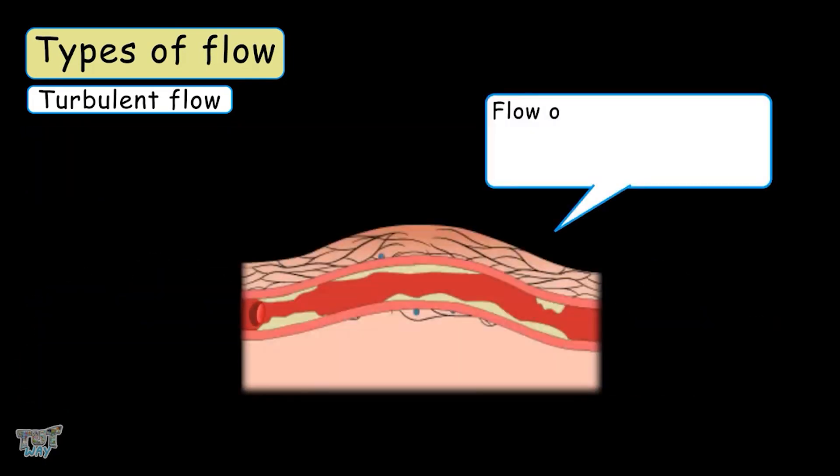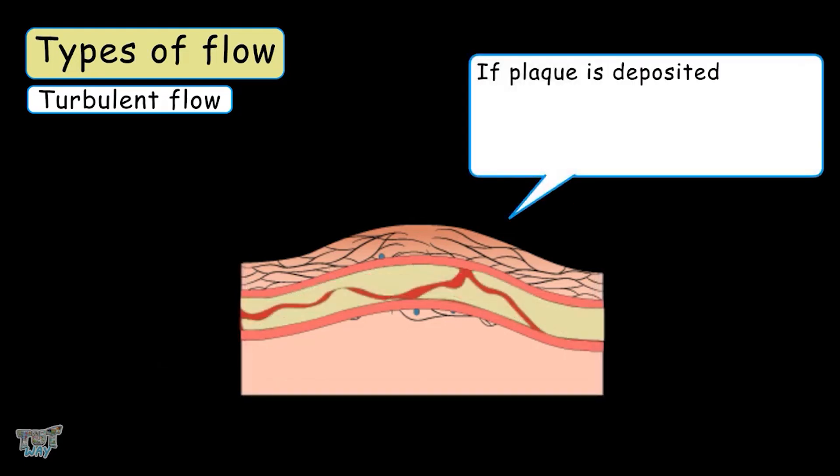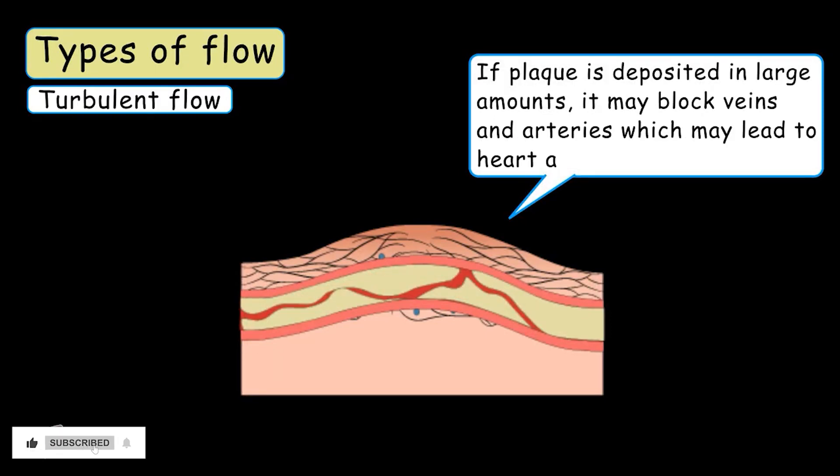Flow of blood in the arteries and veins with deposited plaque is also turbulent. If plaque is deposited in large amounts, it may block veins and arteries which could lead to heart attacks and strokes.